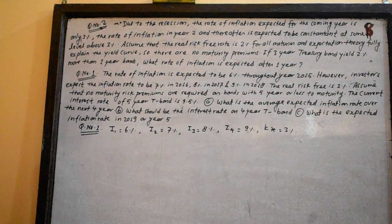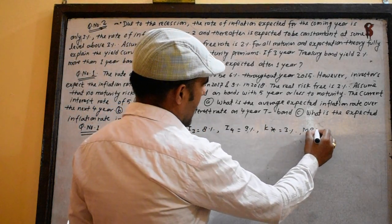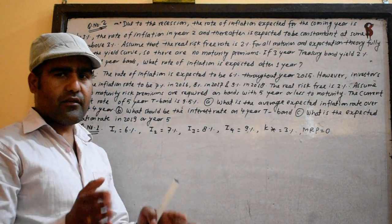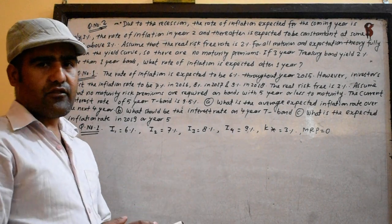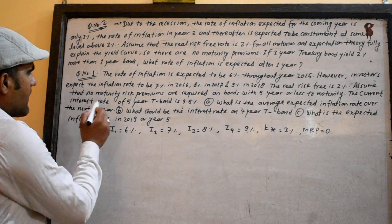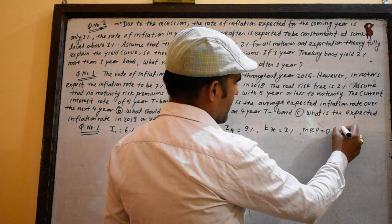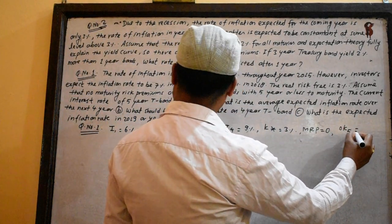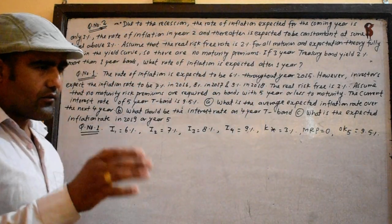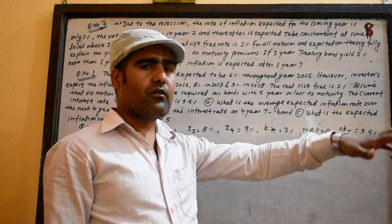The risk premium is 0. The risk rate is 5% of the rate. With 9.5%, if you have a 5-year bond, you will have a 9.5% regular return.